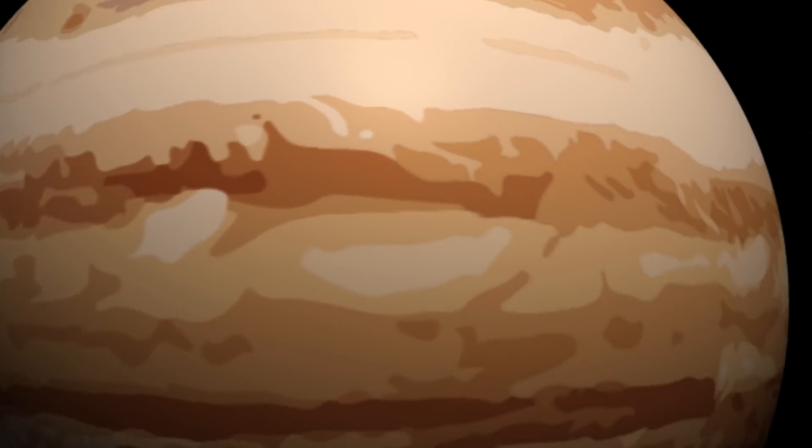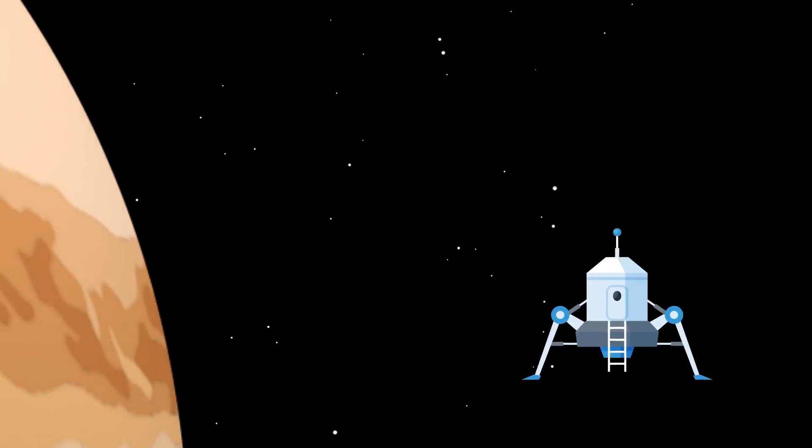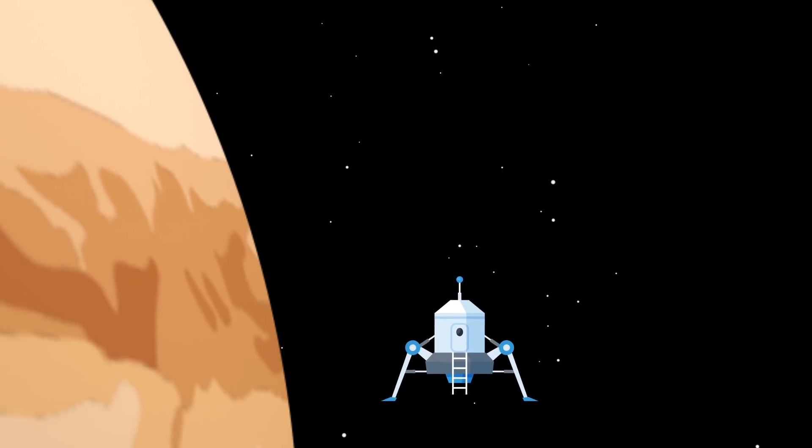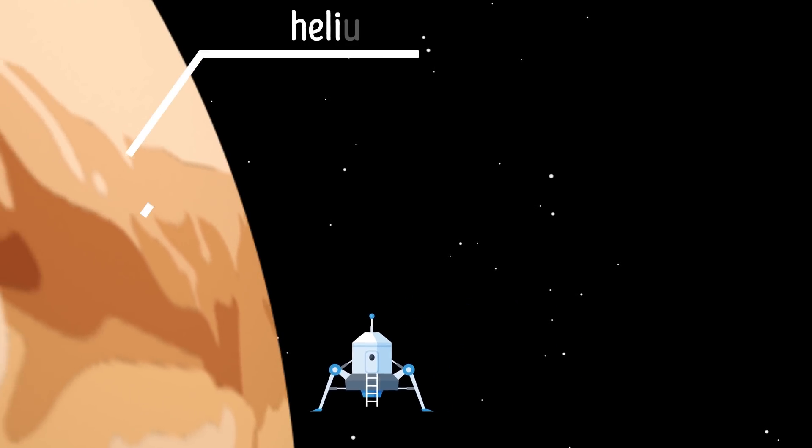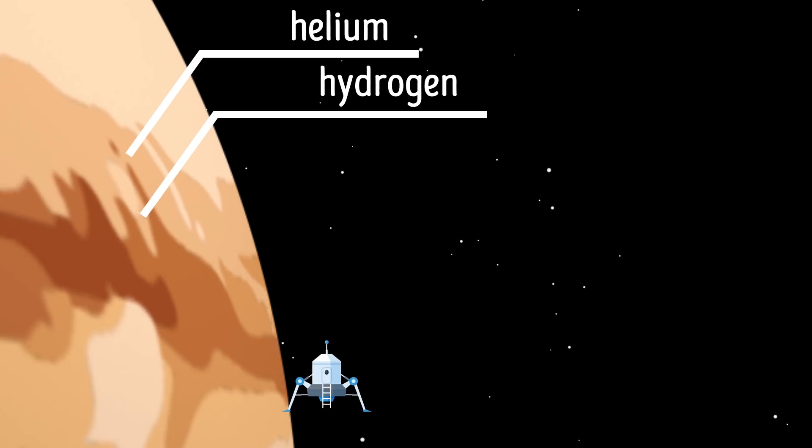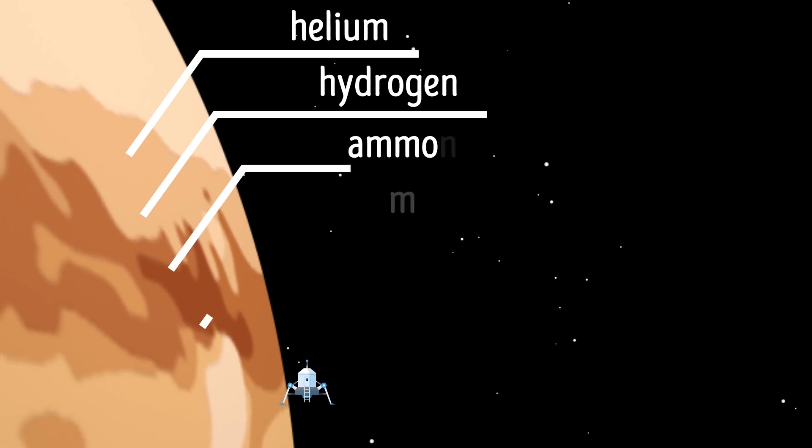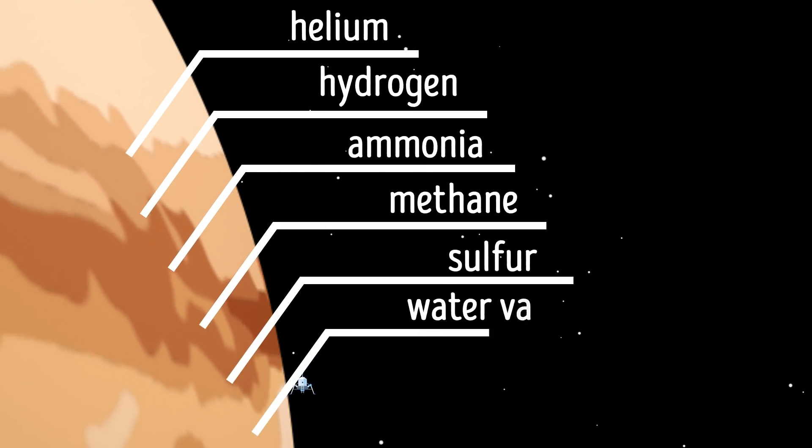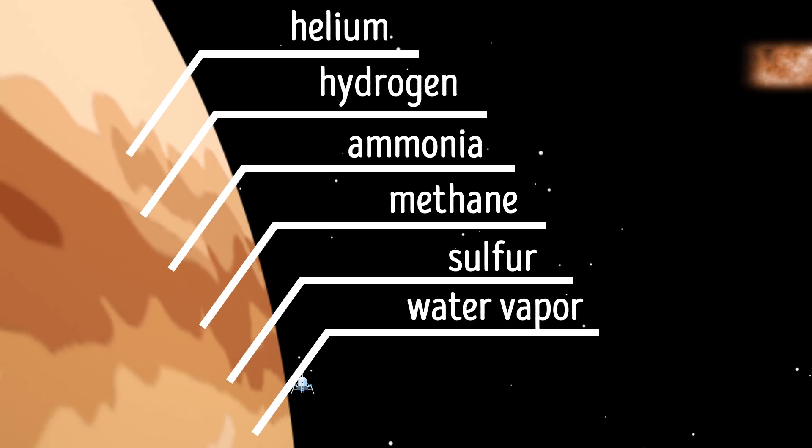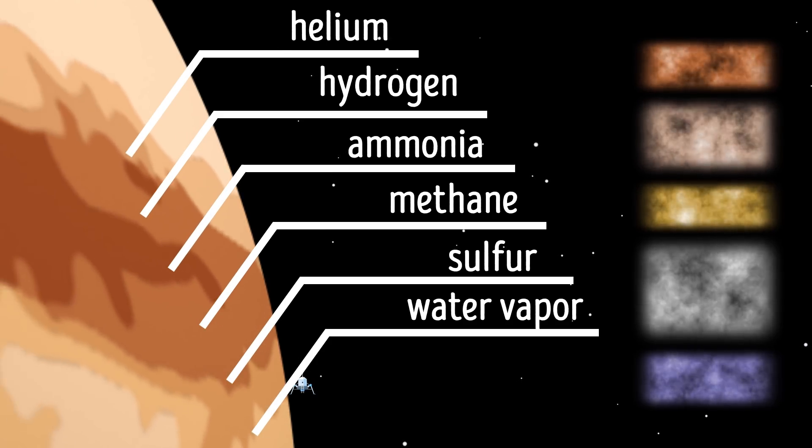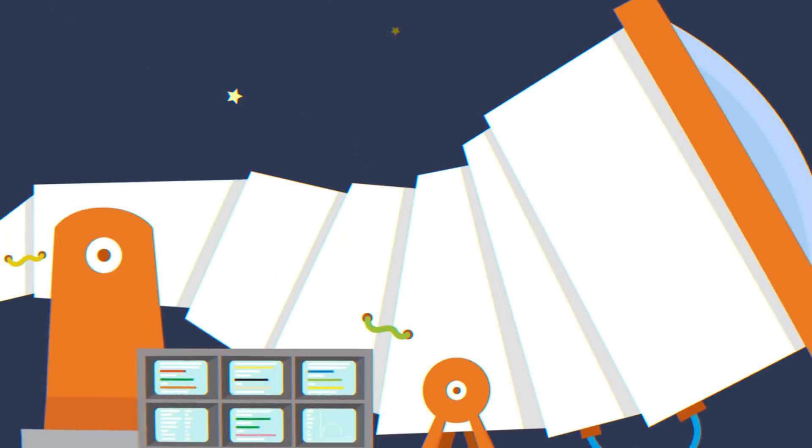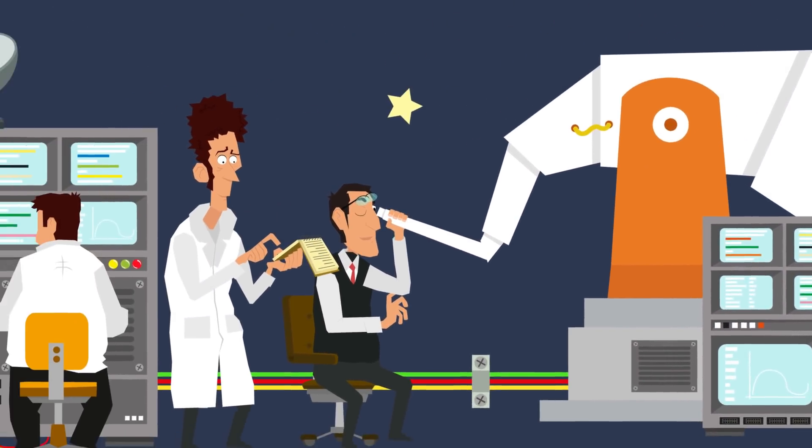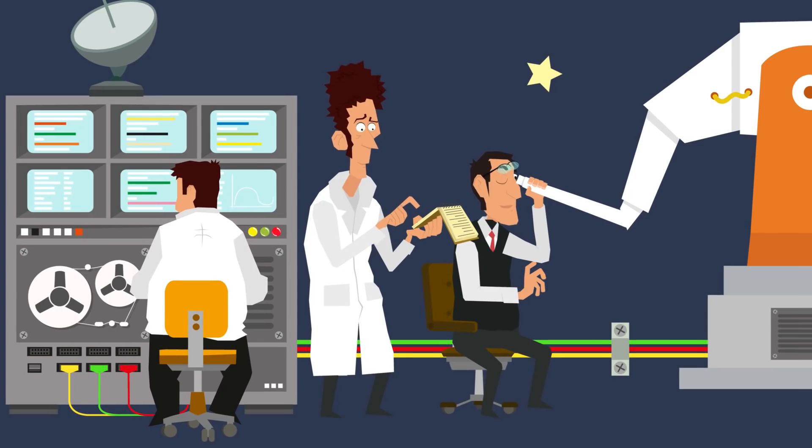If you decide to land on Jupiter, the first problem you'd encounter is the gigantic planet's composition, which is mostly made up of helium and hydrogen. The atmosphere also has small fractions of ammonia, methane, sulfur, and water vapor. Due to the pressure and temperature differences, the gases that make up Jupiter's atmosphere separate into layers. This is what creates those red and white bands that we can clearly see from Earth. It's a remarkable sight to behold, but it doesn't make your task any easier.